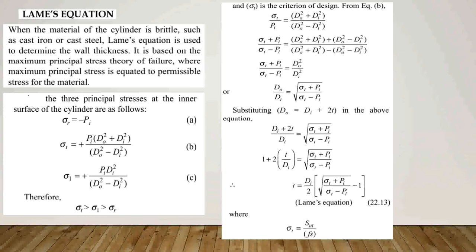Three principal stresses at the inner surface are taken: sigma-R equals minus PI (A); sigma-T equals plus PI times (DO² plus DI²) divided by (DO² minus DI²) (B); and sigma-L equals plus PI times DI² divided by (DO² minus DI²) (C).